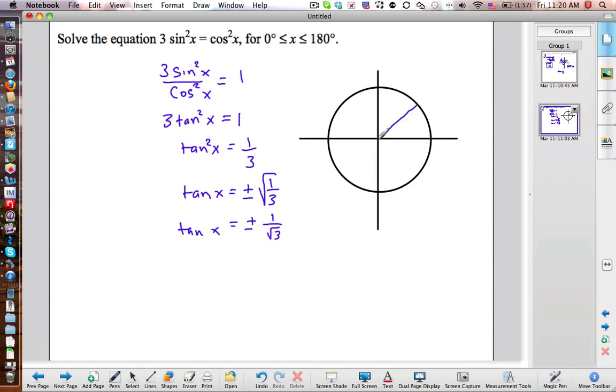Tangent there. So this angle right here, pi over 3, the point is 1 half, comma, root 3 over 2. This point right here is root 3 over 2, comma, half.